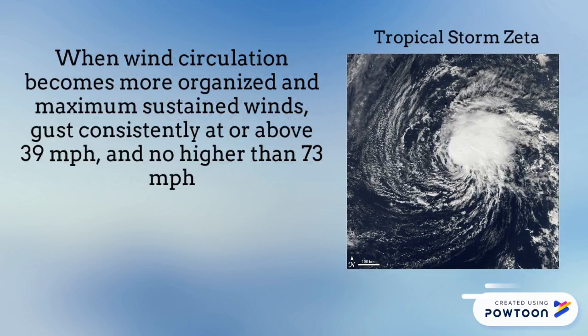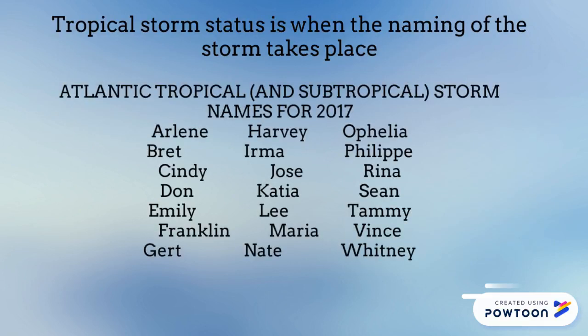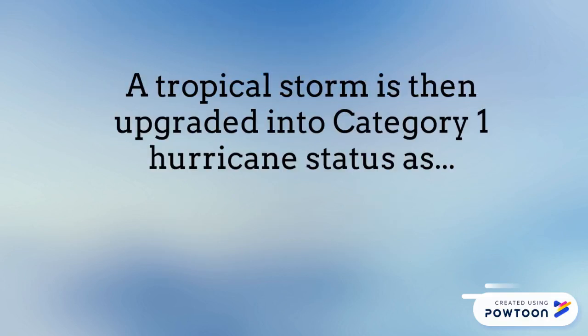An upgrade to a tropical storm occurs when the wind circulation becomes more organized and maximum sustained winds gust constantly at or above 39 mph and no higher than 73 mph. A tropical storm status is when the naming of the storm takes place.